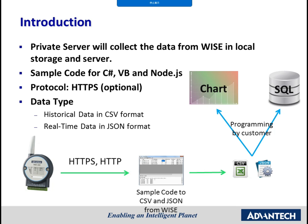The user simply sets the private server configuration in the WISE module and launches the private server sample code on the target computer. WISE will then upload or push the data to it. WISE can push two kinds of data to the private server: real-time and historical data. The real-time data is in JSON format and historical data is in CSV format.